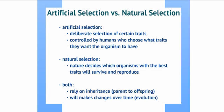So, artificial selection versus natural selection. Artificial selection is a deliberate selection of certain traits — humans get to control what the organism looks like, what it acts like, and so on. In natural selection, it's basically nature that decides which organisms with the best traits will survive and reproduce offspring. But both rely on inheritance — parents passing traits to their offspring — and both bring about changes over time, which is evolution.